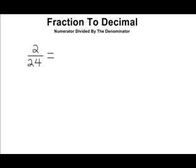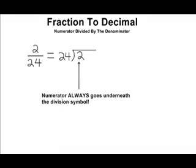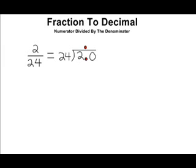First we write the numerator of 2 underneath the division sign and the denominator of 24 on the outside. The numerator will always be written on the inside and there is no exception to this rule. Now notice that 24 cannot be divided into two wholes. So what we do is we write a decimal after the number 2 and write another decimal directly above that one and then add a 0.